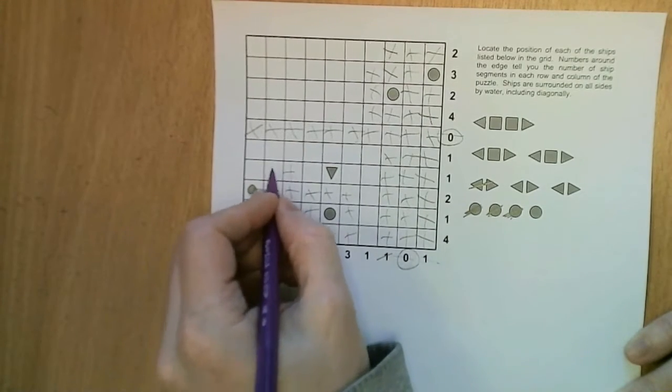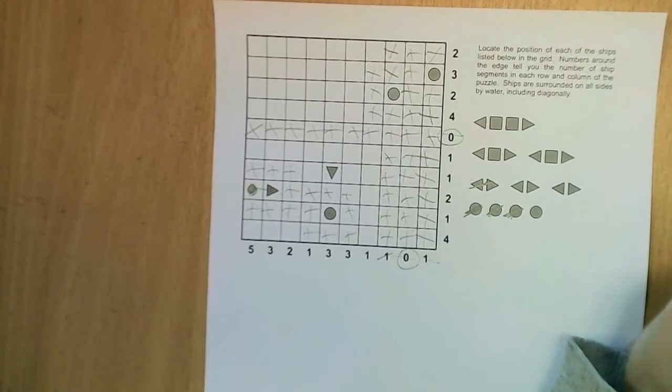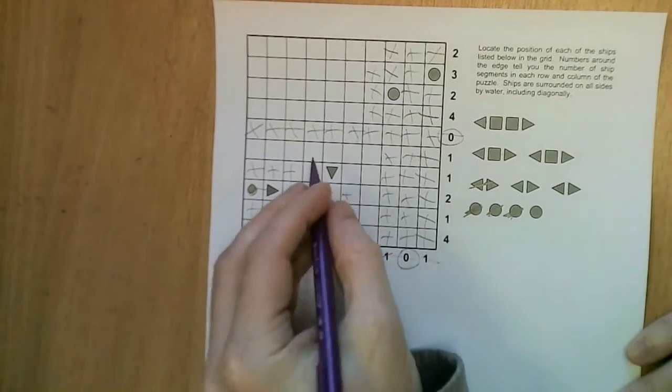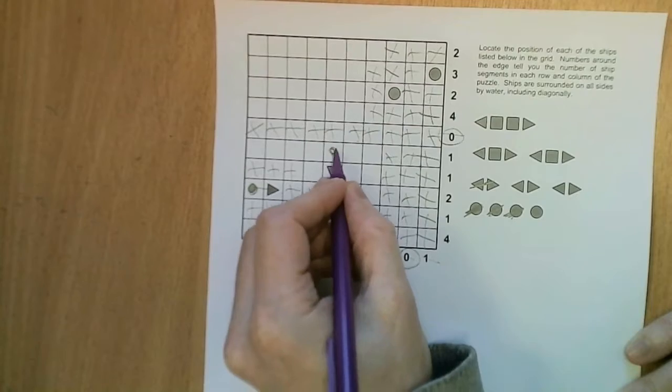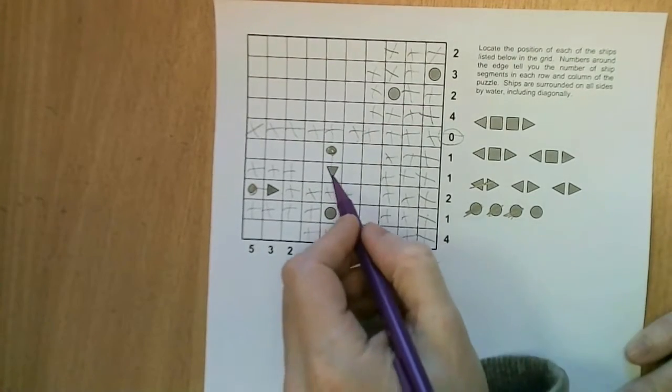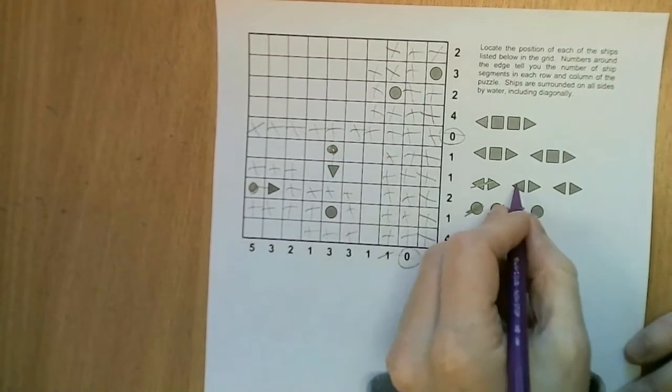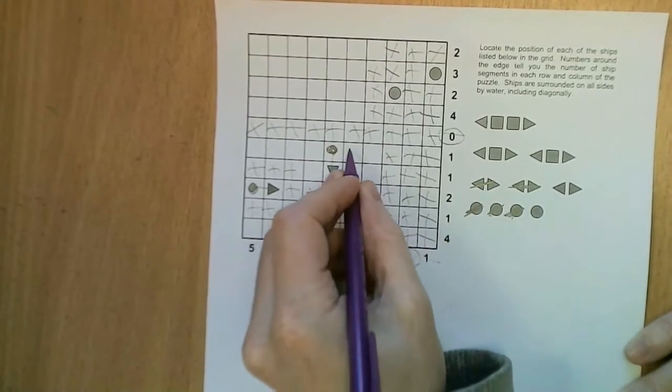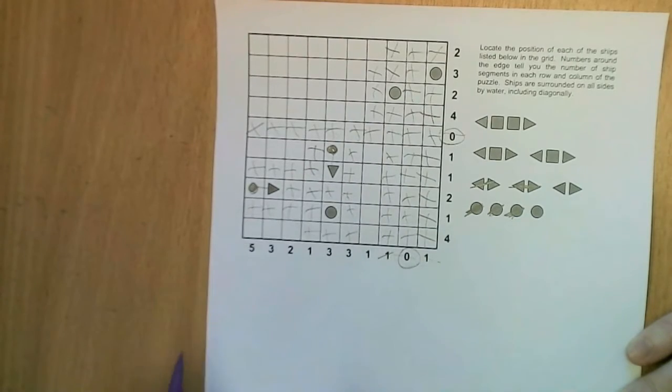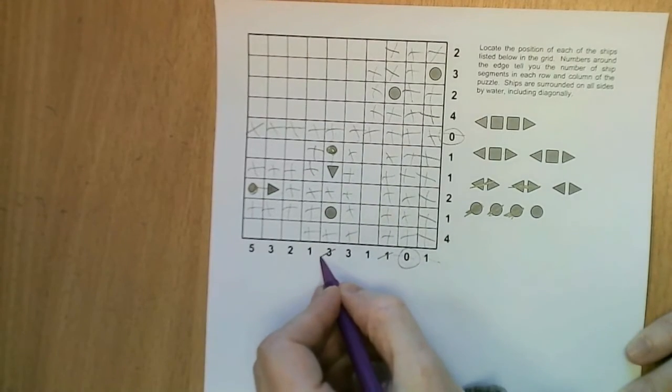And so we can mark the water around that. Likewise here we have the same thing, that's the only option. This must be part of a ship of at least two squares, well it can be at most two squares because there's an X there. And we can mark in the water around it, we now have our three.